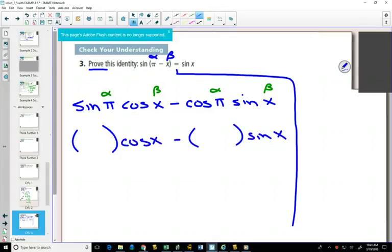So if I go to pi on my unit circle, sine is my y-coordinate. What's my y-coordinate going to be? Zero. Cos of pi, what's my x-coordinate? Negative one.